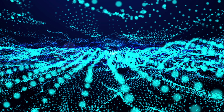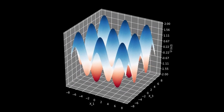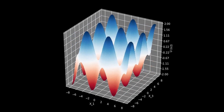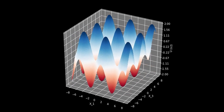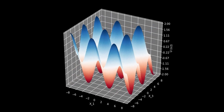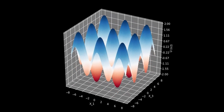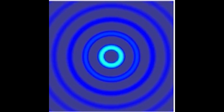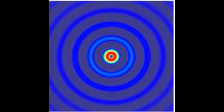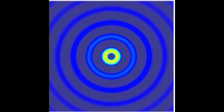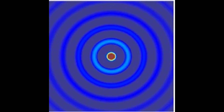The wave function is a mathematical description of a quantum system. It is a complex-valued function that describes the probability of finding a particle in a particular state at a particular location. The wave function gives us information about the behavior of a subatomic particle, such as an electron or a photon. The wave function is often denoted by the Greek letter psi, and its value at any point in space and time is given by the square of its magnitude, meaning that the probability of finding a particle at a location is proportional to the magnitude squared of the wave function at that location.